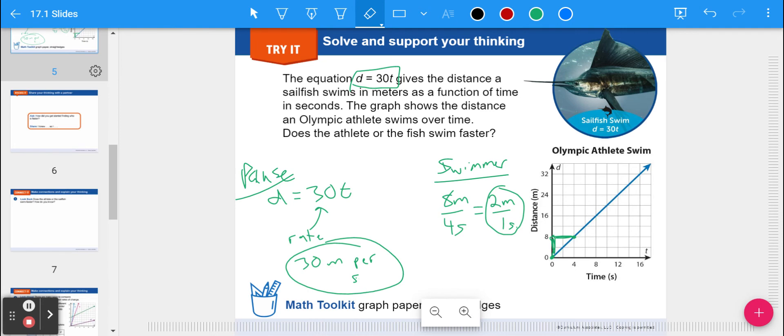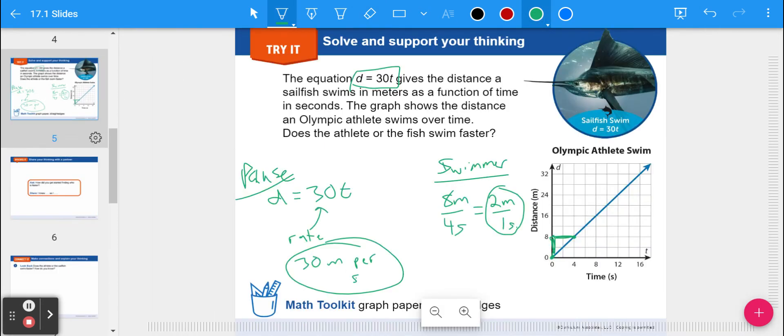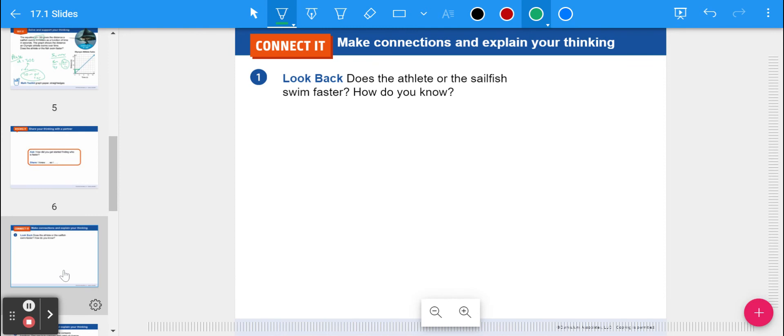And that makes sense. Fish are made to swim. Humans can definitely swim, but not as fast as fish in general. And that's quite a bit different. But you can see that depending on what the representation is. And if you turn the page, that actually answers number 1. Does the athlete or the sailfish swim faster? It's the sailfish, right? The sailfish. Because 30 meters per second versus 2 meters per second.